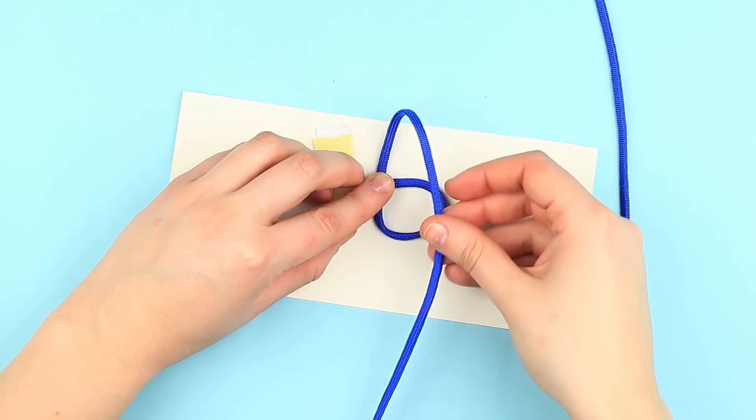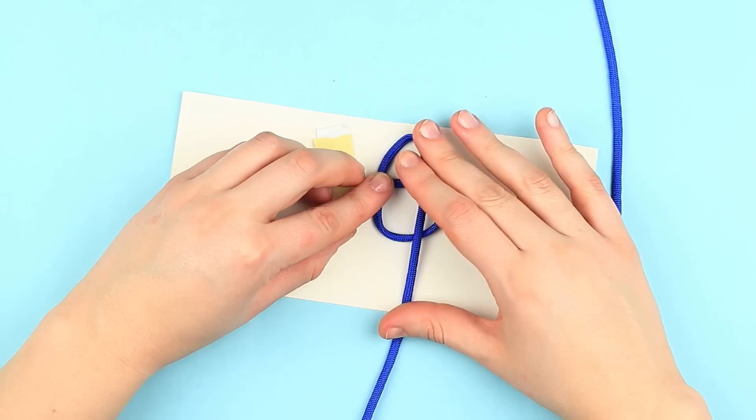Press over. Pass the cord back, shaping another loop. Keep the knot in place.